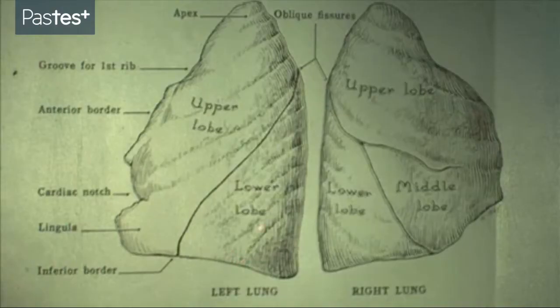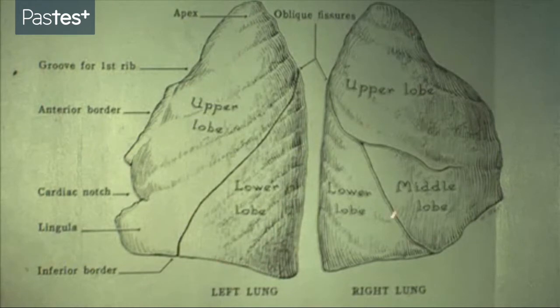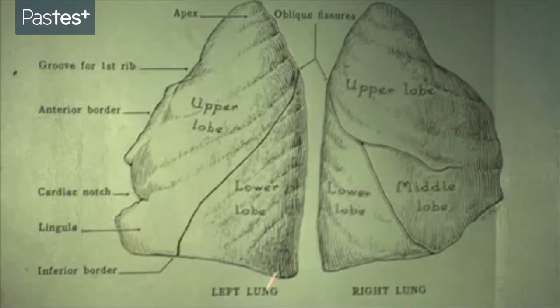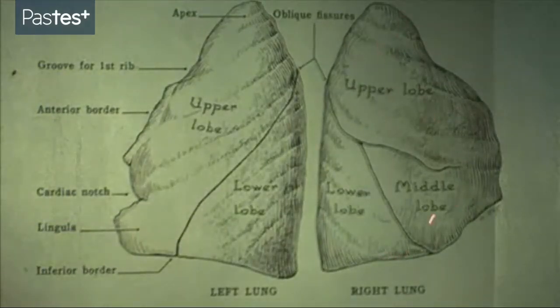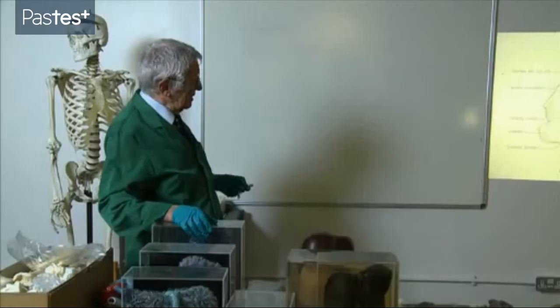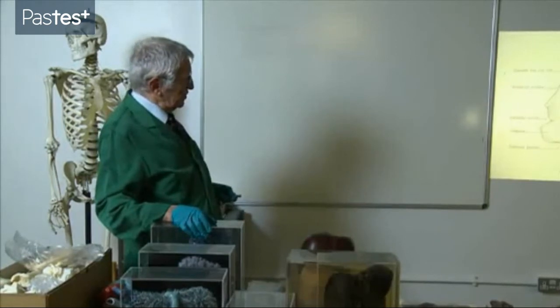The left lung, when you look at it - and I'll show you a specimen in a few minutes - is longer than the right lung, for the simple reason, as I showed you on those chest x-rays, the right dome of the diaphragm is higher than the left dome because the liver is pushing up the right dome of the diaphragm. Therefore, the right lung is pushed up more by the liver than the left lung, with the stomach underlying the left dome of the diaphragm.